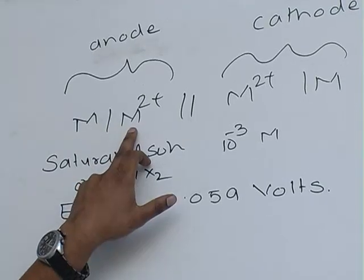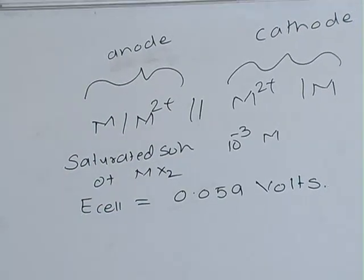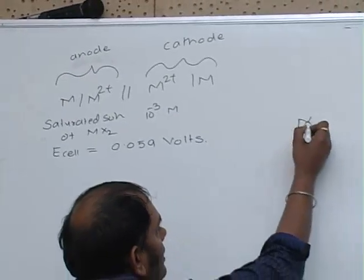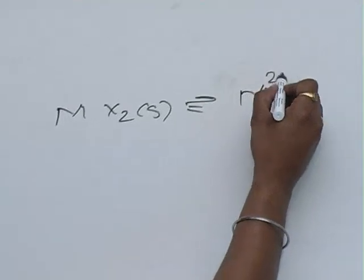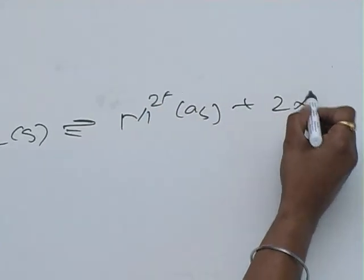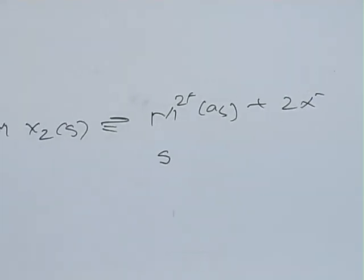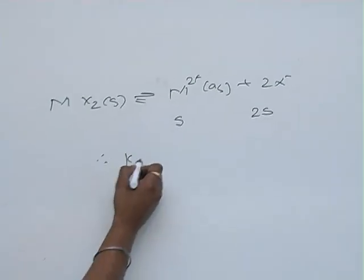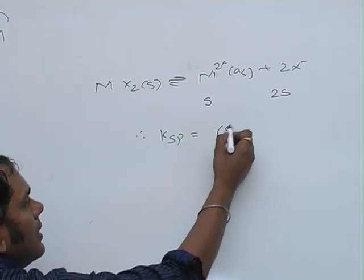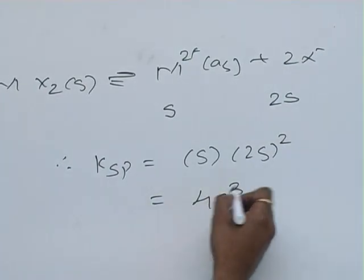If we talk about the dissociation of Mx₂ solid, this gives us M²⁺ ion plus 2X⁻. If the solubility is S, this will be S and this will be 2S. Therefore, Ksp for this compound equals S times (2S)² which comes out to equal 4S³.